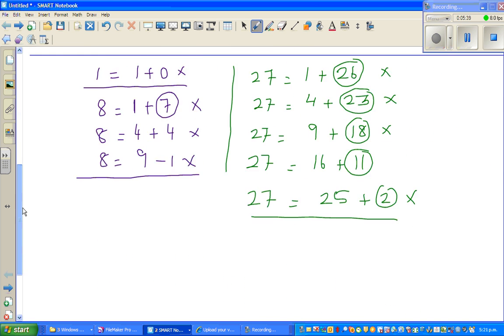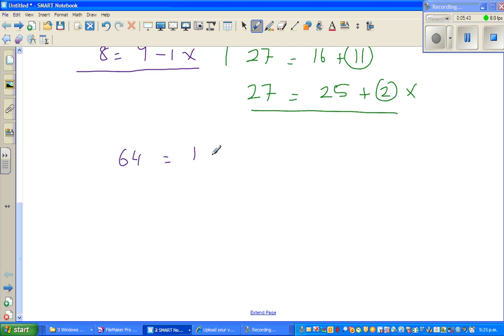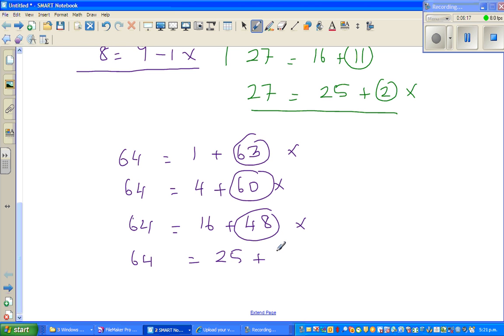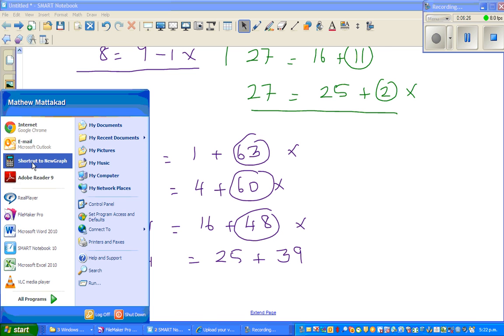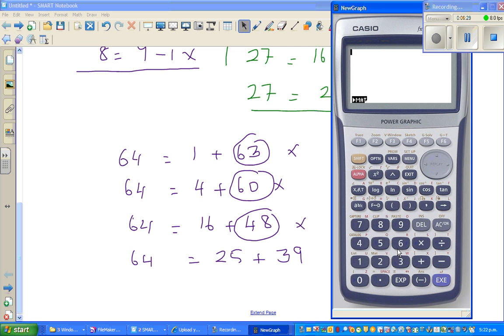The next cube number is 64. 64 is 1 plus 63, not working. Then 64 is 4 plus 60, not right. Next, 64 is 16 plus 48, not right. 64 is 25 plus... let me use a calculator. I'm getting confused. So 64 minus 25 is 39. I was right.